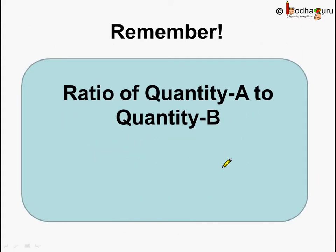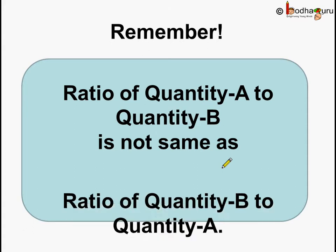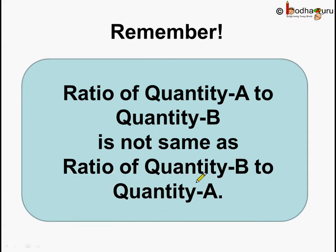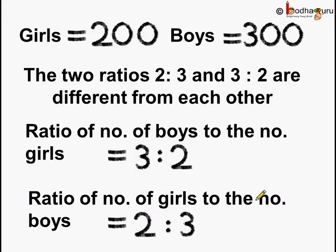Remember, the ratio of quantity A to quantity B is not the same as the ratio of quantity B to quantity A, unless both quantities A and B are the same. As we saw, the ratio of boys to girls was not the same as the ratio of girls to boys.